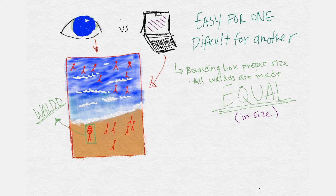But for a computer, it's a little bit more difficult to identify Waldo within a sea of images and then identify where he is and put a bounding box that is the proper size around Waldo. So it's really easy for the eye but more difficult for the computer.